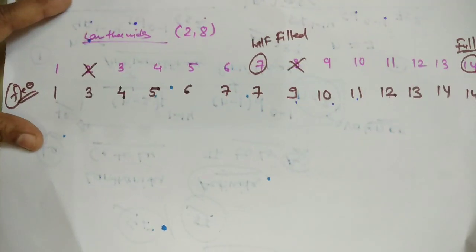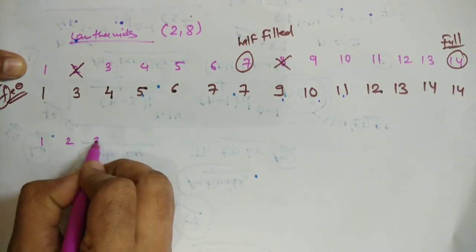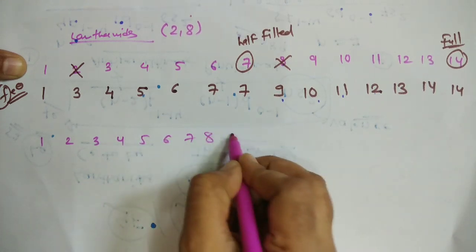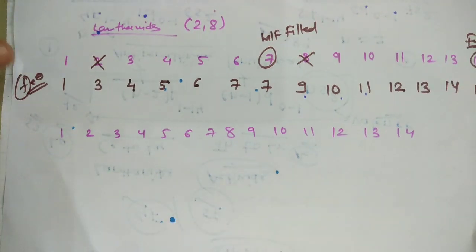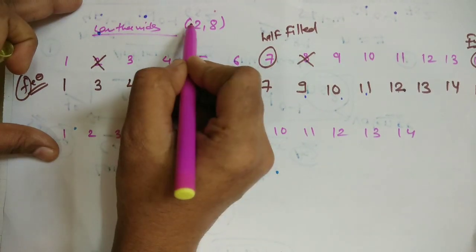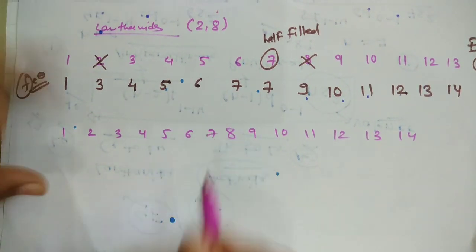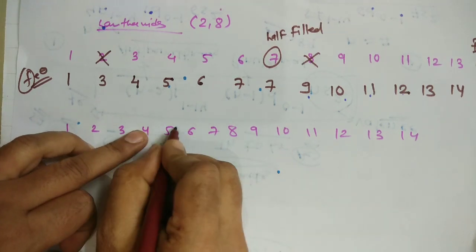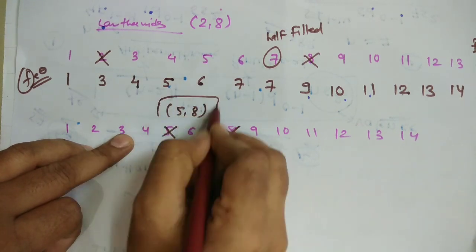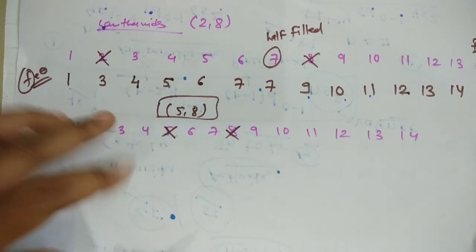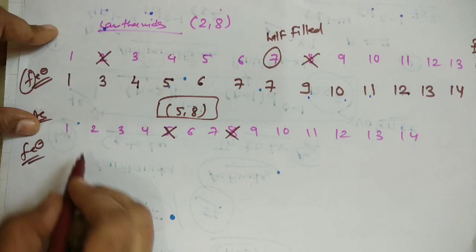Now for the actinide series, we again write 1 to 14 for the f orbital electrons. The trick is similar to the lanthanide, but now for actinides we cancel the 5th and 8th electrons. So the sequence becomes: 1, 2, 3, 4 — then 5 is cancelled — then 6, 7 — 7 is most stable so it stays — then 8 is cancelled — then 9, 10, 11, 12, 13, 14.